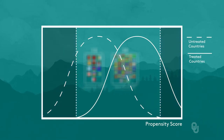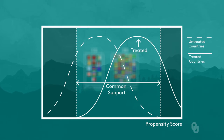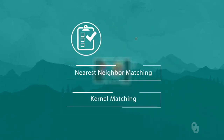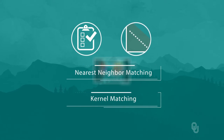They restrict their analysis to the region of common support. They construct the treatment effect by comparing average inflation rates between the treated and their matched controls. They report results using both nearest neighbor and kernel matching, and both methods show that inflation targeting policy does cause lower inflation and lower volatility of inflation.